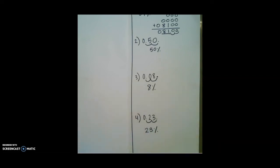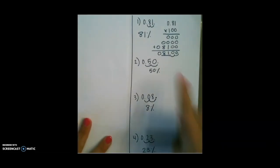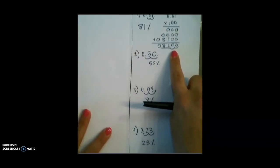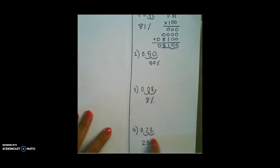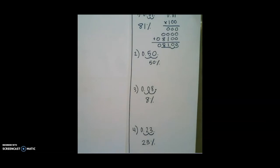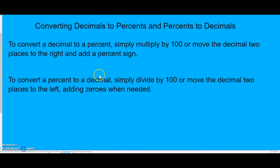So again, essentially, we are multiplying by 100 for each of these, but we chose a shortcut by just moving the decimal two places to the right and adding our percent sign or our zeros where they are necessary. So we looked at converting a decimal to a percent.